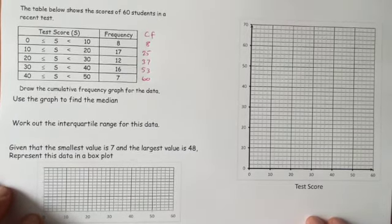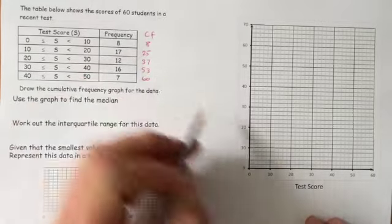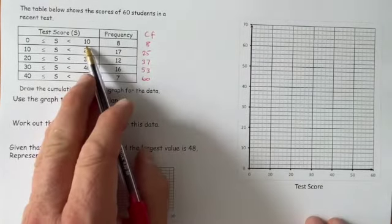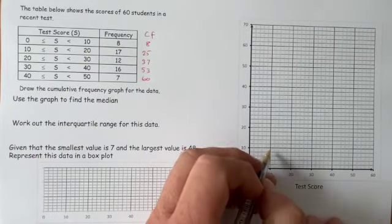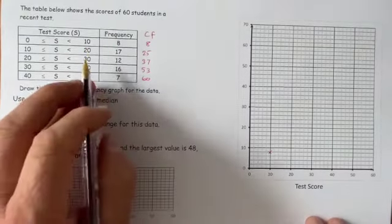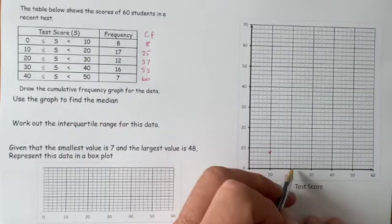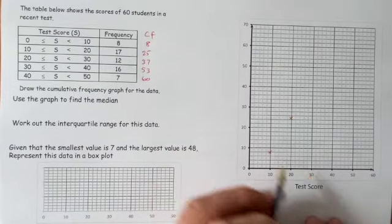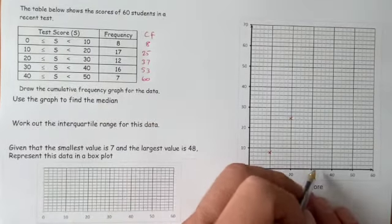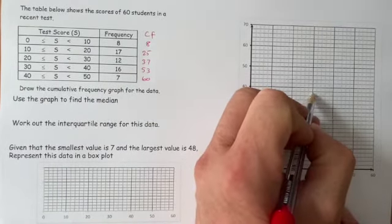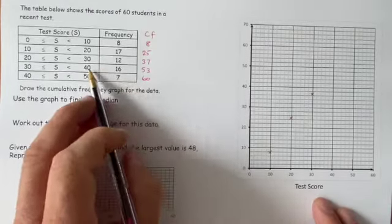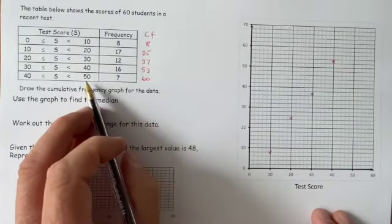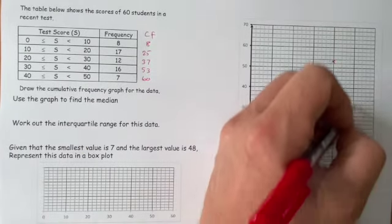With the cumulative frequencies worked out, we can then represent these cumulative frequencies on this graph paper. So 10 and less, there are 8 people. 20 and less, 25 people, so we've got up to 25. 30 and less, 37, up to 37. 40 and less, up to 53.